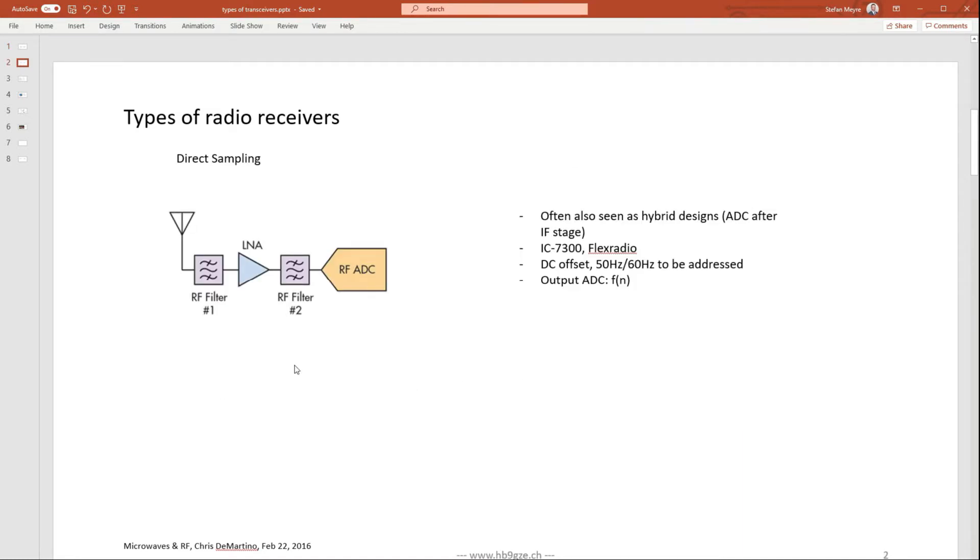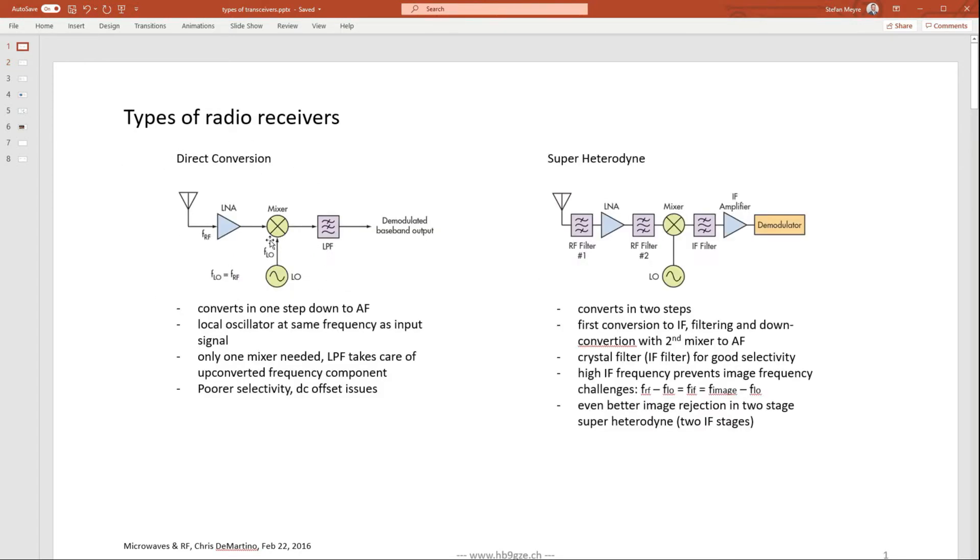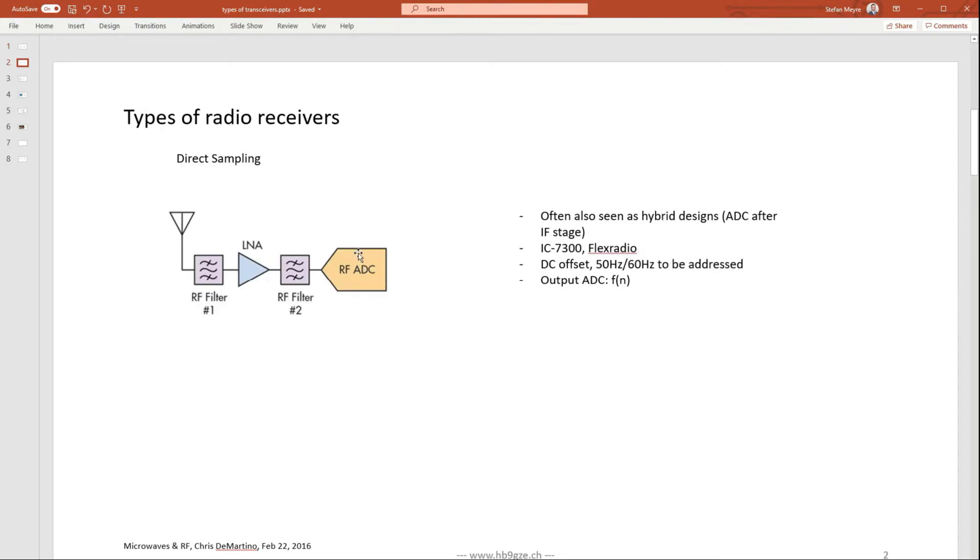So nowadays, the better these ADC converters, these analog to digital converters get, the faster they get, the more linear they get, the more stable they are, the less errors they produce and generate. And the more and more you see that you start sampling your RF signal directly. It is maybe similar to what you see here, direct conversion. However, the mixing is done digitally and you just convert RF with an ADC. And you see this in Flex Radio and the IC-7300 does it that way, I think. And what you have here at the output of the ADC is a discrete sampled RF signal and anything else after that you do in software. Direct sampling.